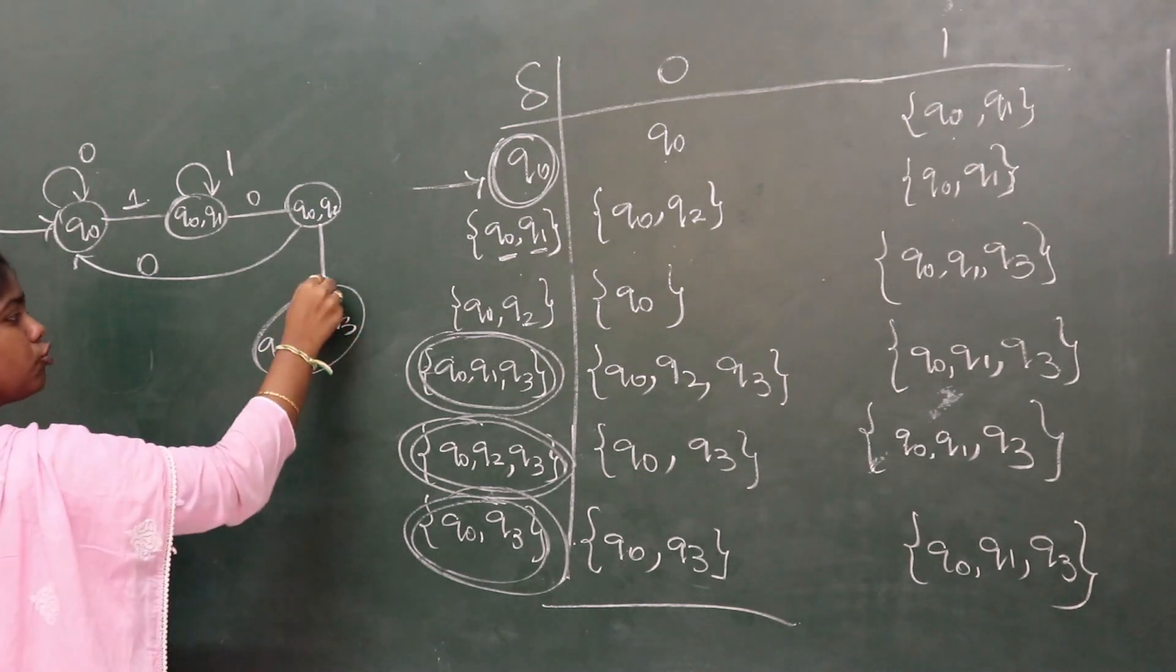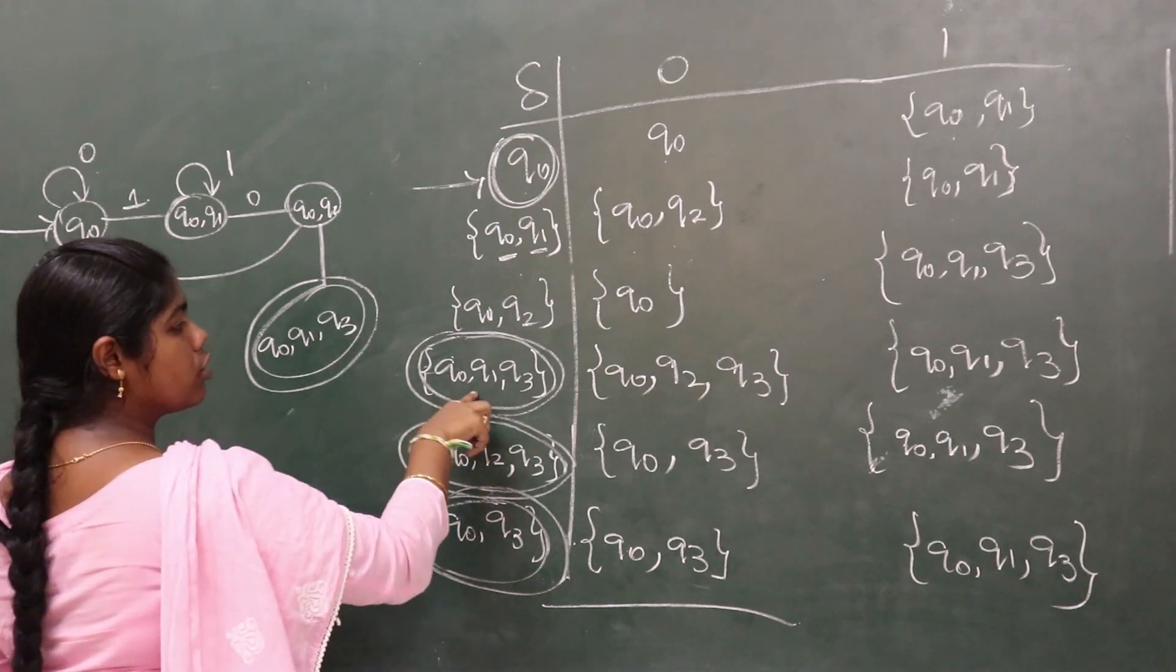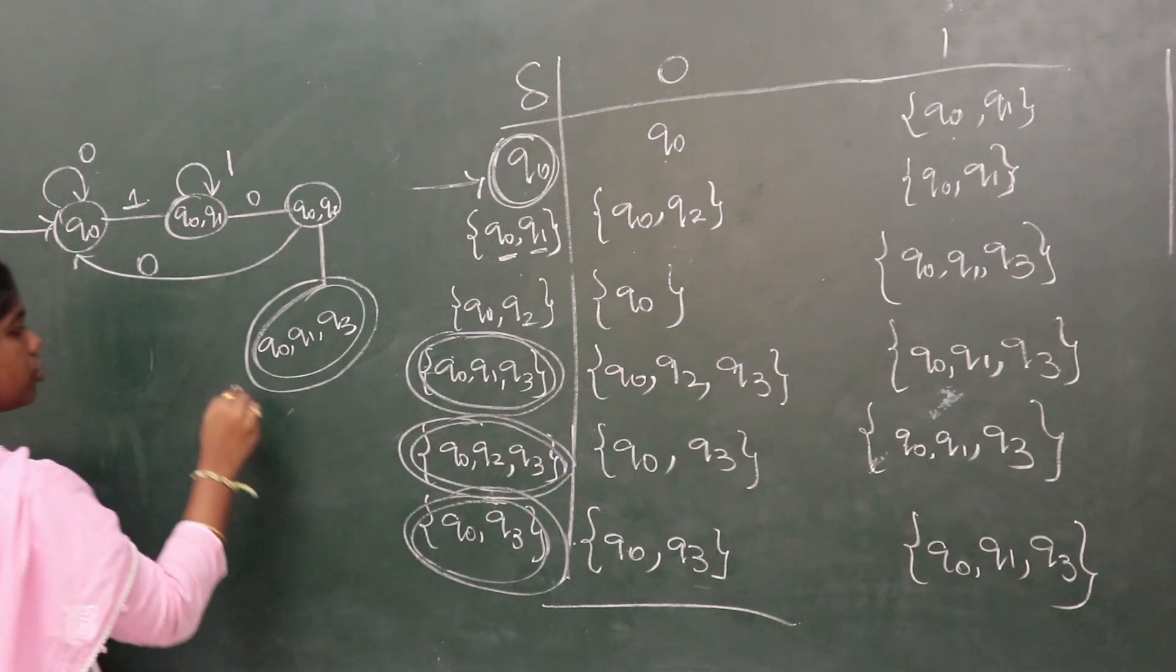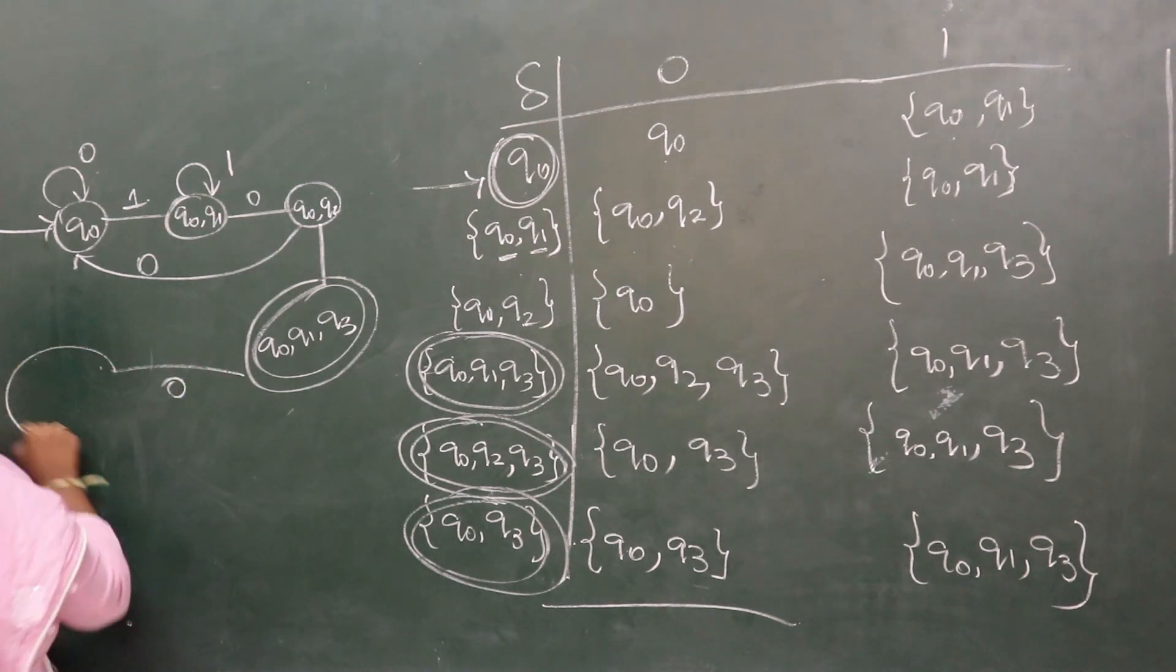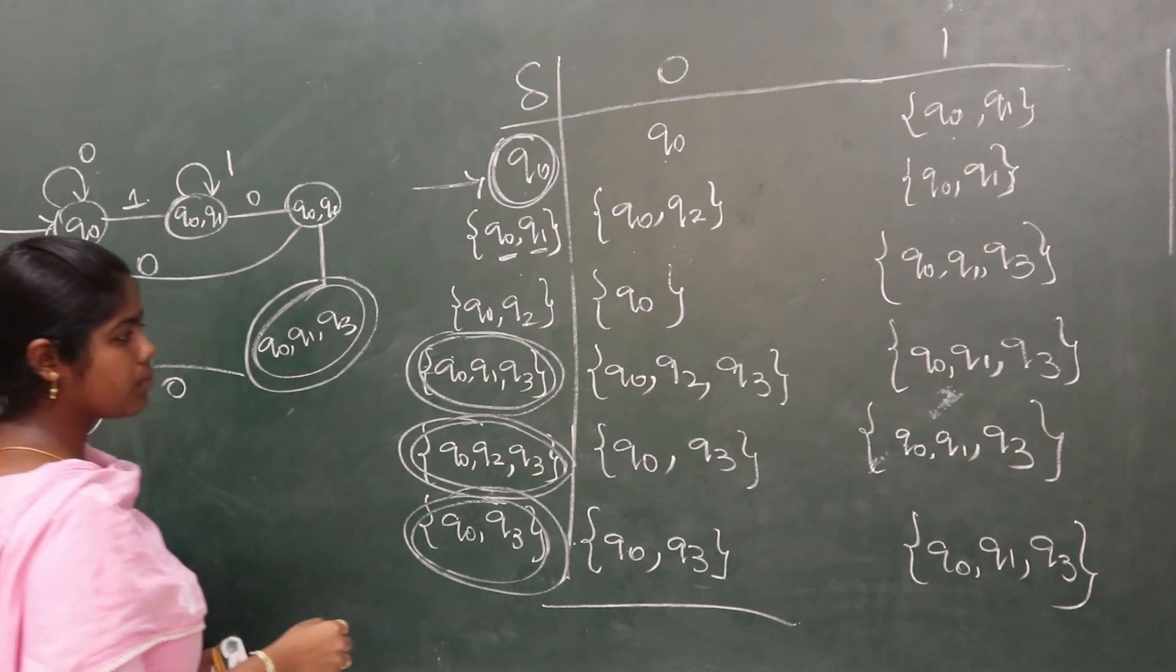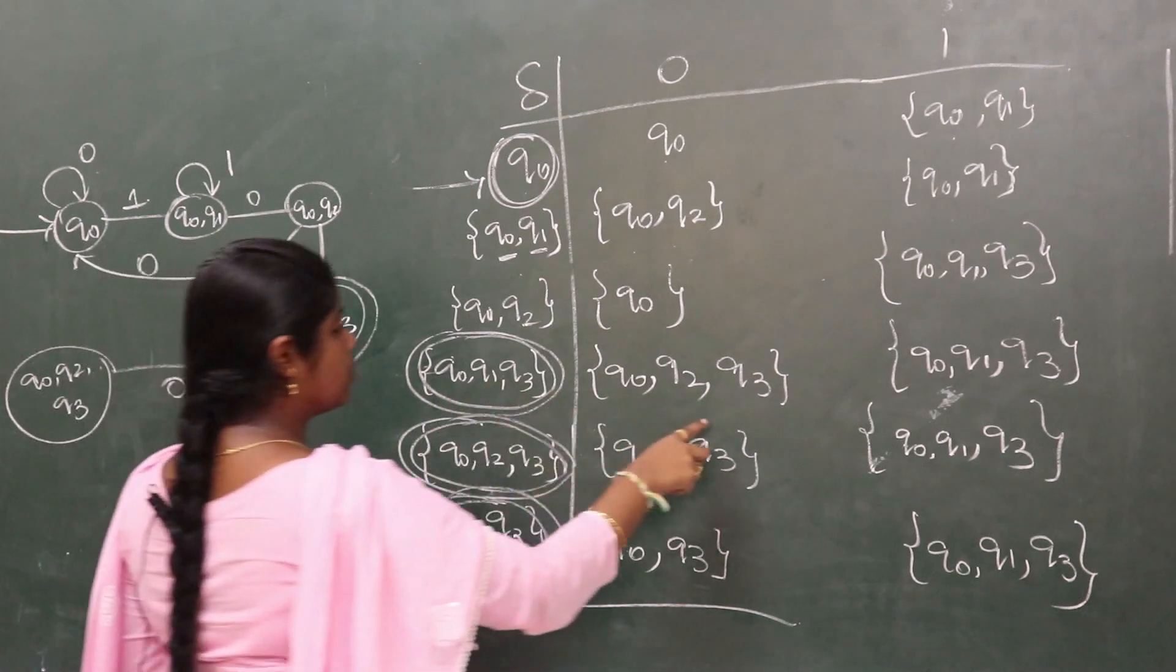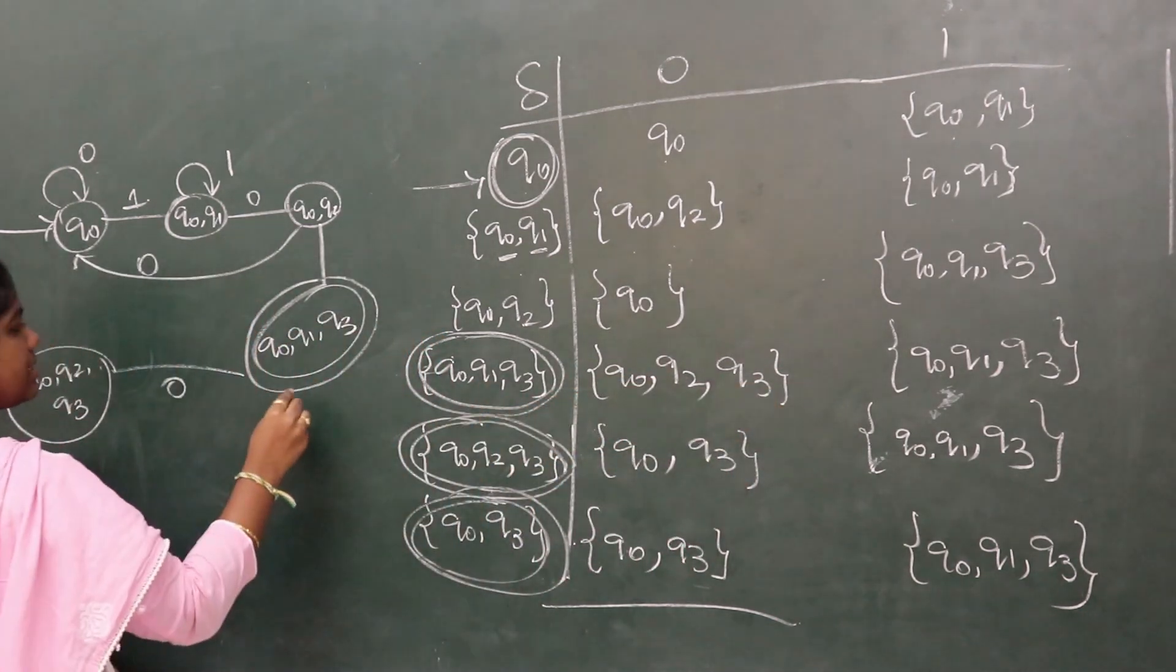Next, q0, q2, q3 on 0 goes to q0, q3. As this contains q3, this is the final state. q0, q1, q3 on 0 goes to q0, q2, q3. q0, q2, q3 on 1 and q0, q1, q3 on 1 go to the same loop.